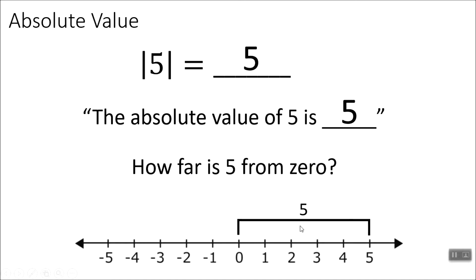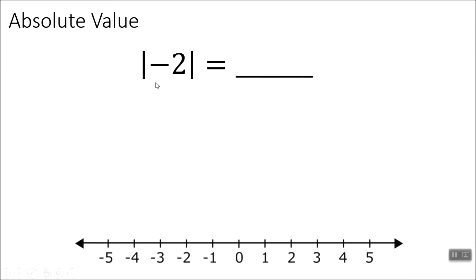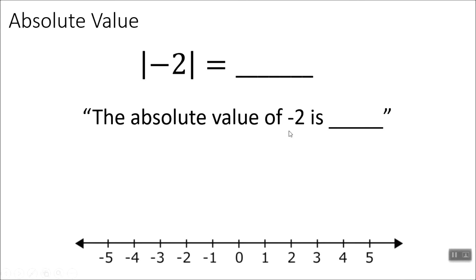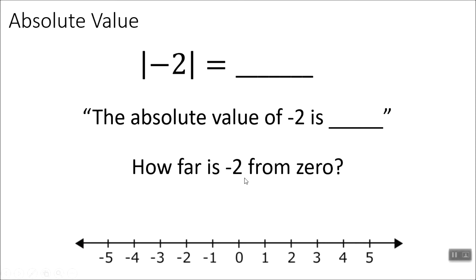This is another one that gets confusing for kids because sometimes they think, oh, I just take the opposite of whatever comes out of the bars. No — any time you come out of an absolute value bar, it's going to be positive. Any number inside the absolute value bar will come out positive. So the absolute value of negative 2 is something — how far is negative 2 from 0? It's 2 away. So the absolute value of negative 2 is 2.